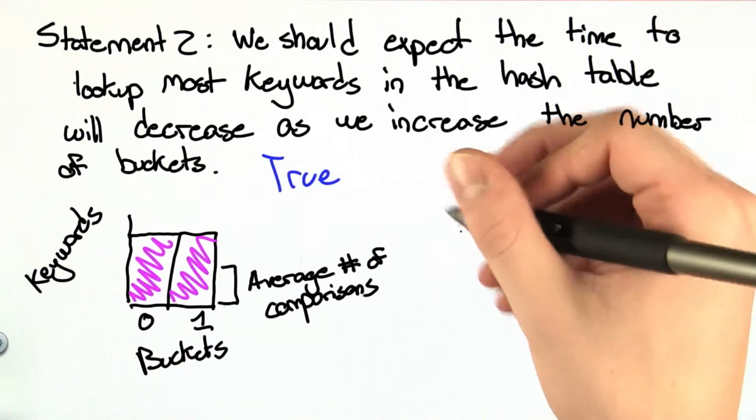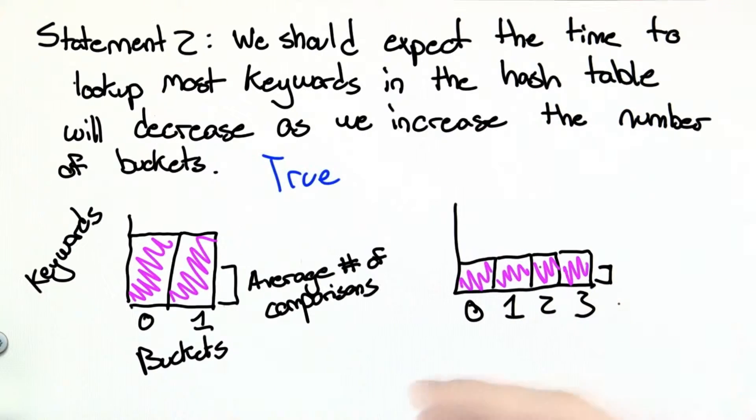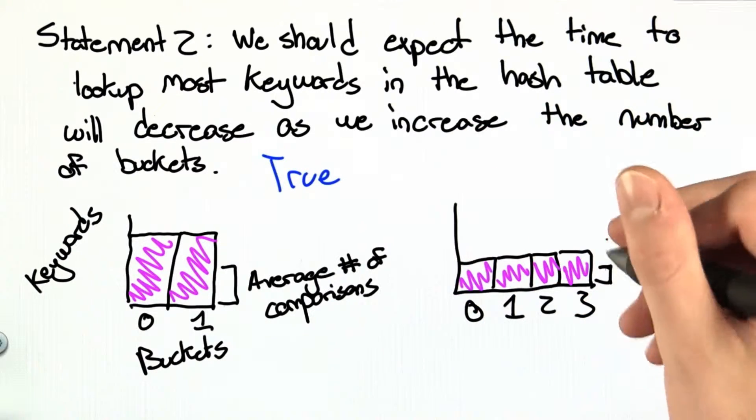If we double the number of buckets, the average lookup time is decreased significantly. And with a good hash function, the time is going to decrease even more.